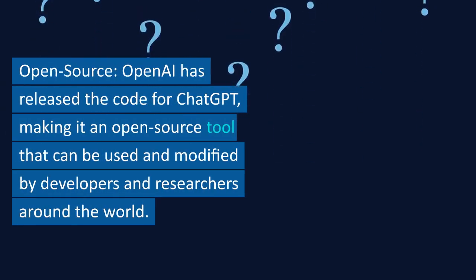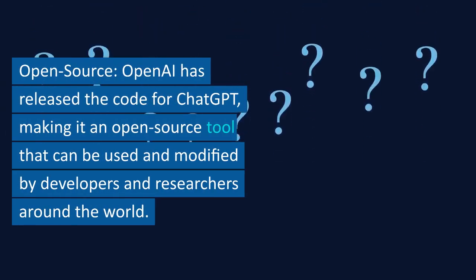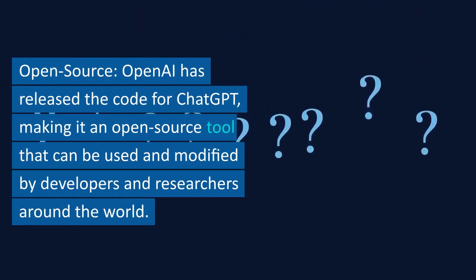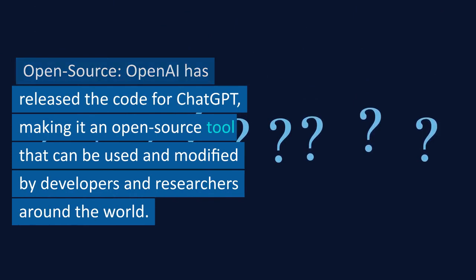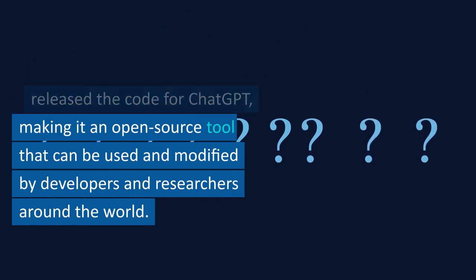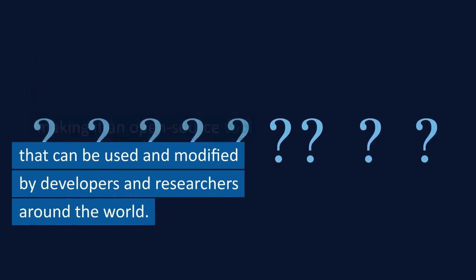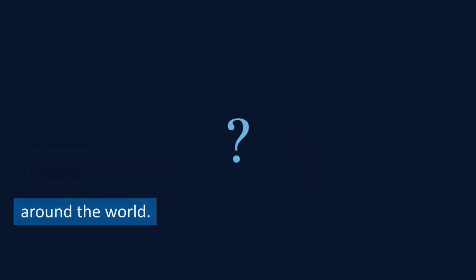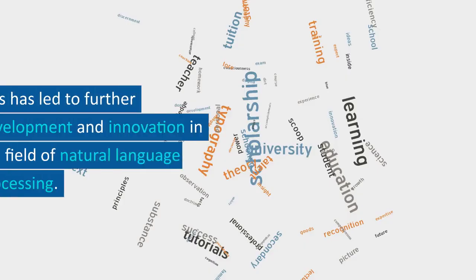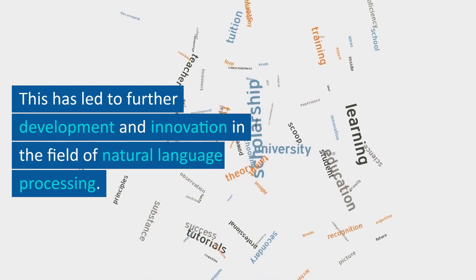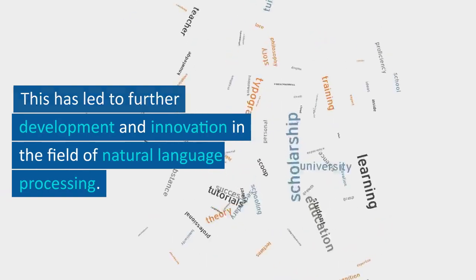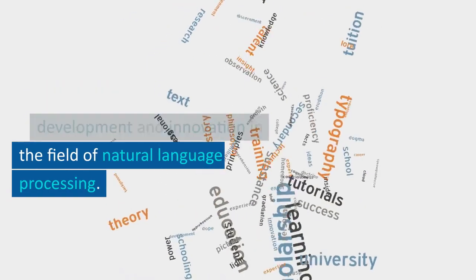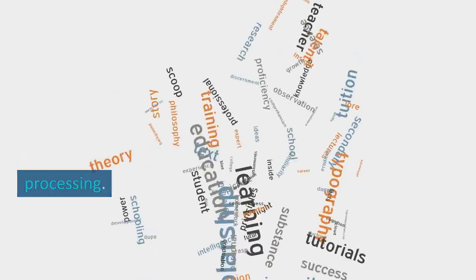Open Source: OpenAI has released the code for ChatGPT, making it an open source tool that can be used and modified by developers and researchers around the world. This has led to further development and innovation in the field of natural language processing.